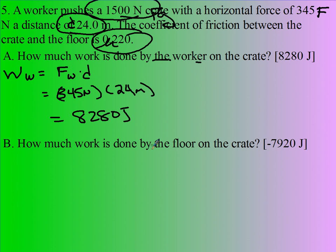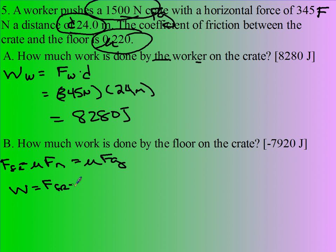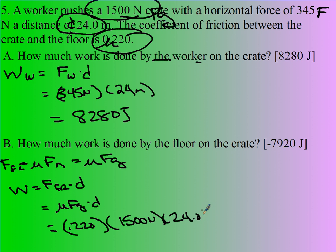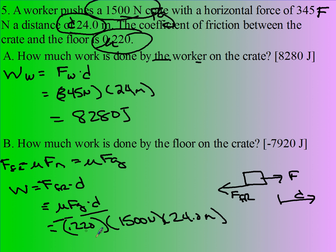How much work is done by the floor on the crate? This is friction. The force of friction is mu times FN. In this case, since the surface is horizontal, FN equals the weight, so the work done by friction is mu times Fg times D. Mu is 0.22, Fg is 1,500 newtons, and the displacement is 24 meters. Now, friction acts opposite to D, so the work done by friction is negative — approximately negative 7,920 joules.